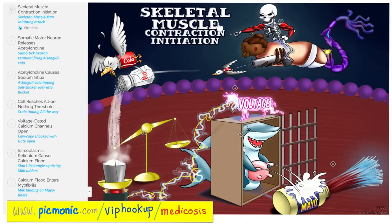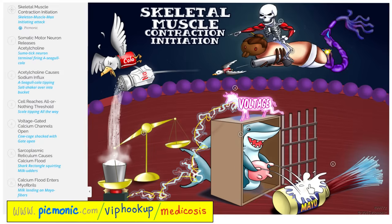Let's review skeletal muscle contraction initiation from Picmonic. Skeletal muscle is going to contract — how does it happen? You need acetylcholine. How do you get depolarization of the membrane? Sodium influx, until you reach the threshold, which opens the voltage-gated calcium channel, releasing calcium from its prison — the sarcoplasmic reticulum's terminal cistern. Calcium is released onto the myofibrils, binds troponin C, troponin T removes the tropomyosin, exposing the active sites on the actin. Myosin binds actin, brings actin closer to the midline — hashtag muscle contraction.